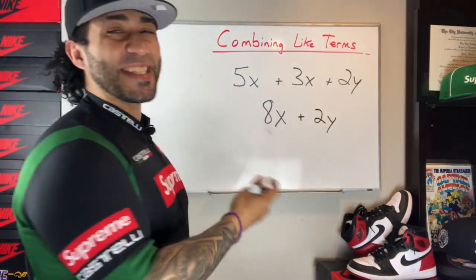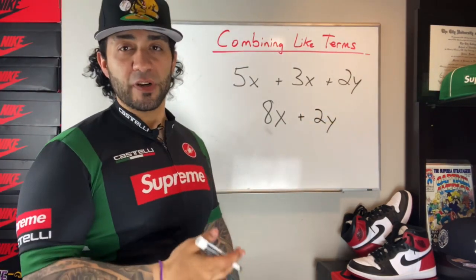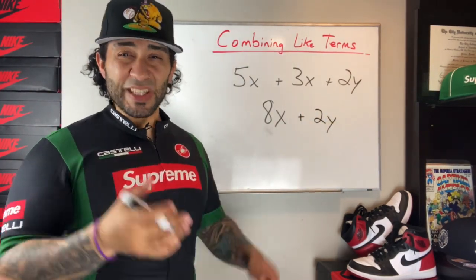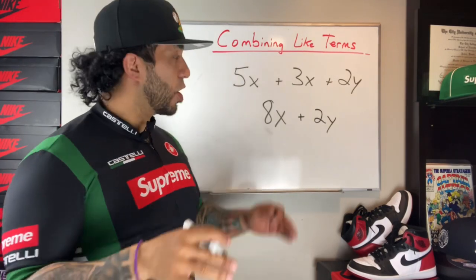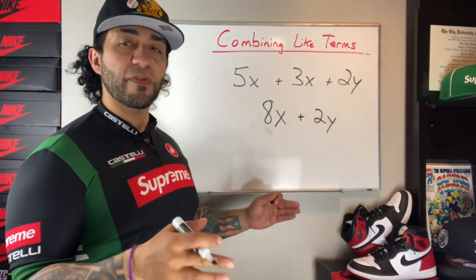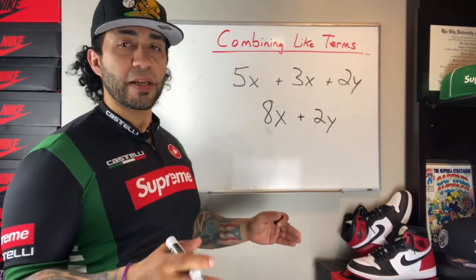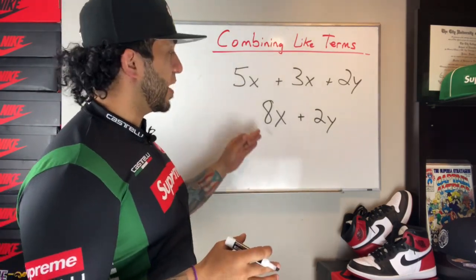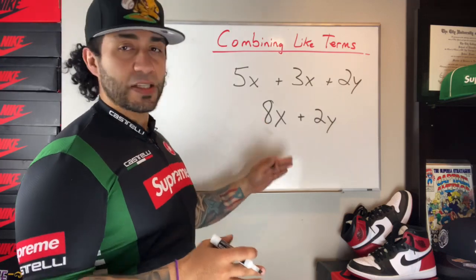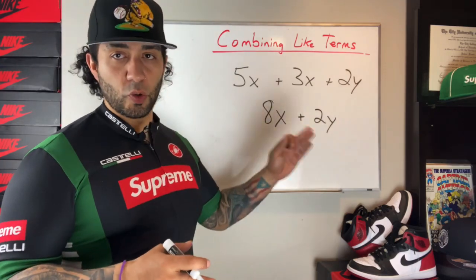And what we've done is simplified our expression. We haven't solved it — there's no equal sign. We're just simplifying it by combining like terms, and we're left with the term 8x plus 2y.